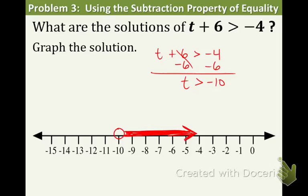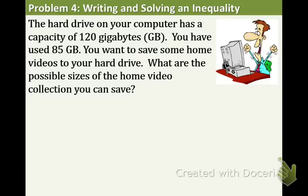The solutions of t greater than negative 10 are all real numbers bigger than negative 10, which means to the right of that negative 10 on the graph. So the numbers that are bigger than negative 10 are the negative numbers that are less negative and also the positive numbers. And on to the last example. This is an application problem.